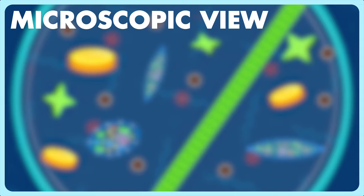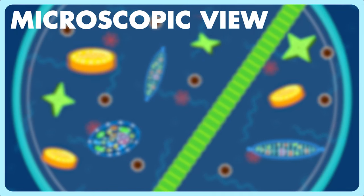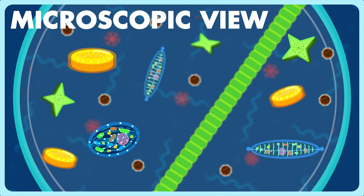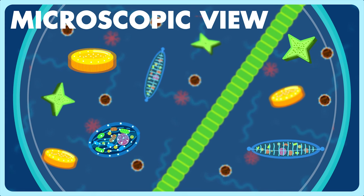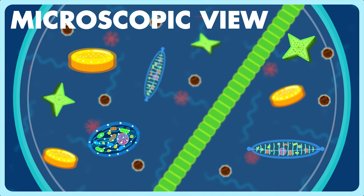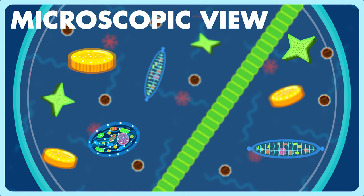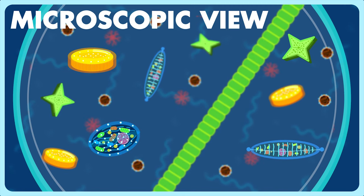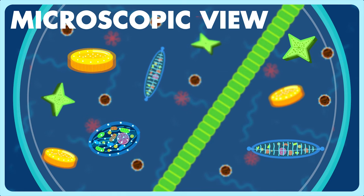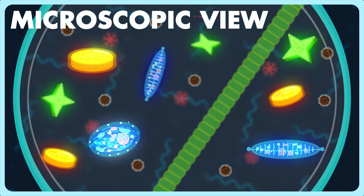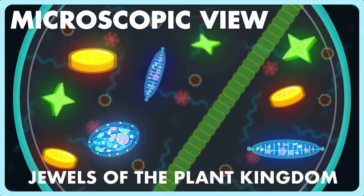If we collect samples of water from different water bodies and view it under microscope, we'll find an entirely different universe consisting of millions of organisms. But the most attractive of them all will be small single-celled eukaryotes called diatoms, or also nicknamed as the jewels of the plant kingdom.